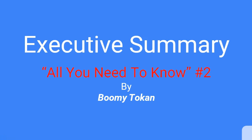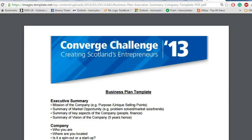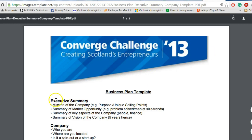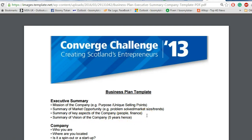Let's dive on and look at two examples right now that you can find of Executive Summaries. In this particular example, it's from Coverage Challenge, Creating Scotland's Entrepreneurs, and it gives us what the Executive Summary right here should cover. It talks about the mission of the company, the purpose, its uniqueness and selling points, then a summary of the market opportunity, summary of key aspects of the company, and then the summary of the vision of the company. It's quite a small Executive Summary type of template we're looking at here.